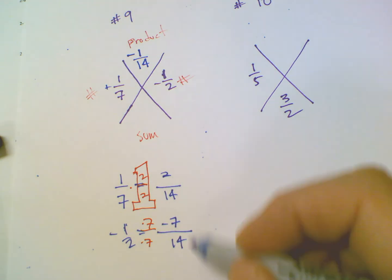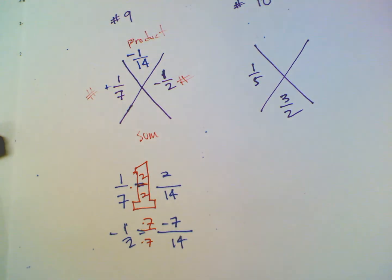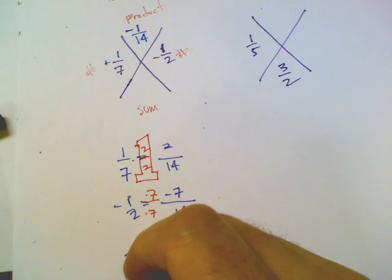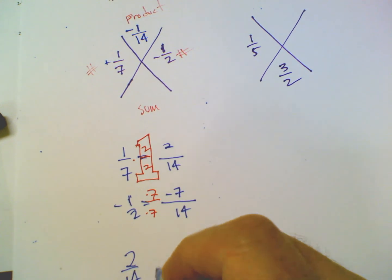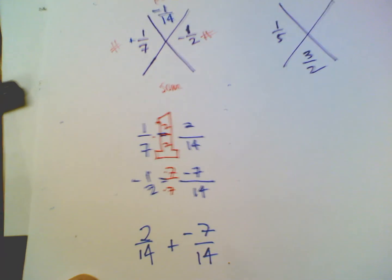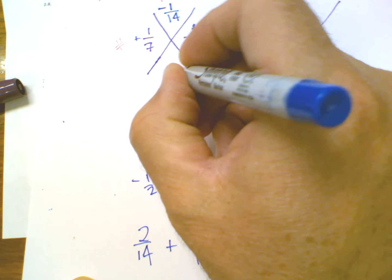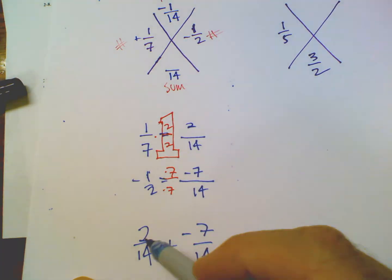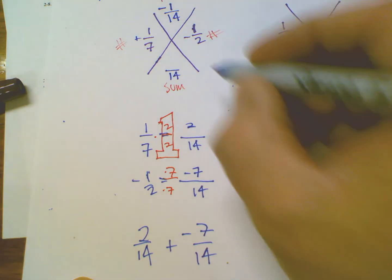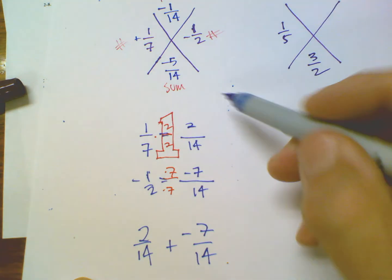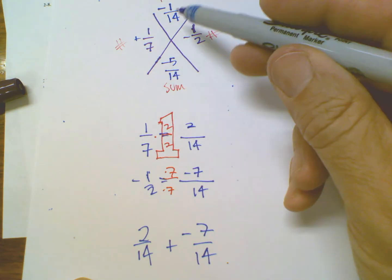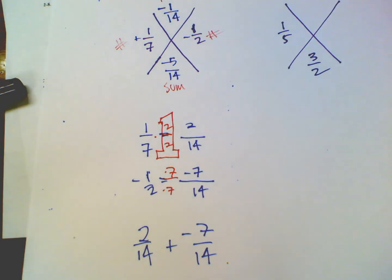So if I'm going to add those two, if I'm going to take, now I'm looking at 2/14, and I'm adding that to negative 7/14. So when you add, we have the common denominator, so the denominator is going to stay the same. But the numerators add 2 and negative 7 give you negative 5. So negative 5/14 on the bottom, negative 1/14 on top. So that's number 9.